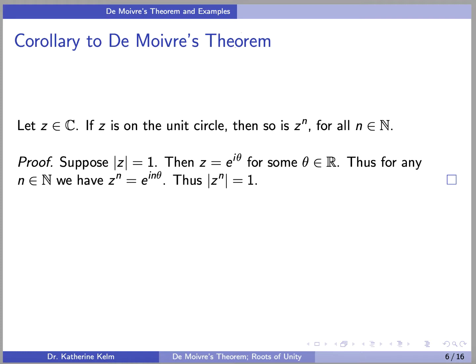Proof: Suppose z is on the unit circle — that means its distance from the origin is 1. Then z can be expressed as e^(iθ) for some θ. Thus, for any n, we have z^n = e^(inθ). Looking at the coefficient, the coefficient is 1; therefore, the absolute value is 1.